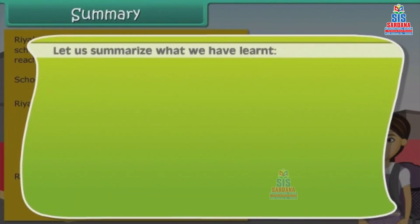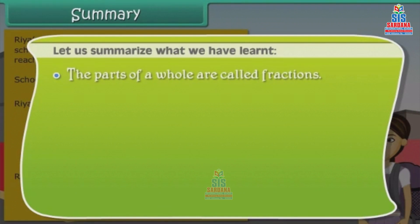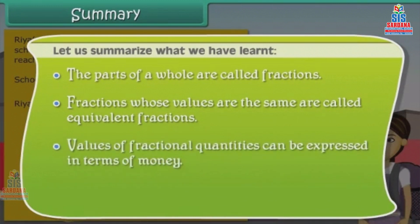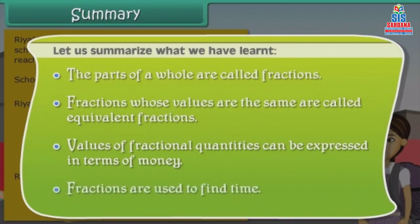Summary. Let us summarize what we have learned. The parts of a whole are called fractions. Fractions whose values are the same are called equivalent fractions. Values of fractional quantities can be expressed in terms of money. Fractions are also used to find time.